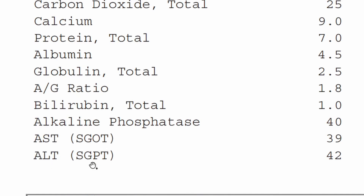Some doctors use the SGOT and SGPT names, but I always just call them AST and ALT. In any case, we'll see these elevated in things like hepatitis. I've had patients with their ALT and AST up in the 300s, and after additional testing found they had hepatitis C. These could also be elevated in other types of tissue damage.